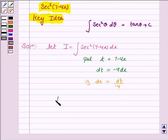So substituting all these values in the integral, the integral I becomes secant square t dt upon minus 4. So this integral becomes minus 1 upon 4 secant square t dt.